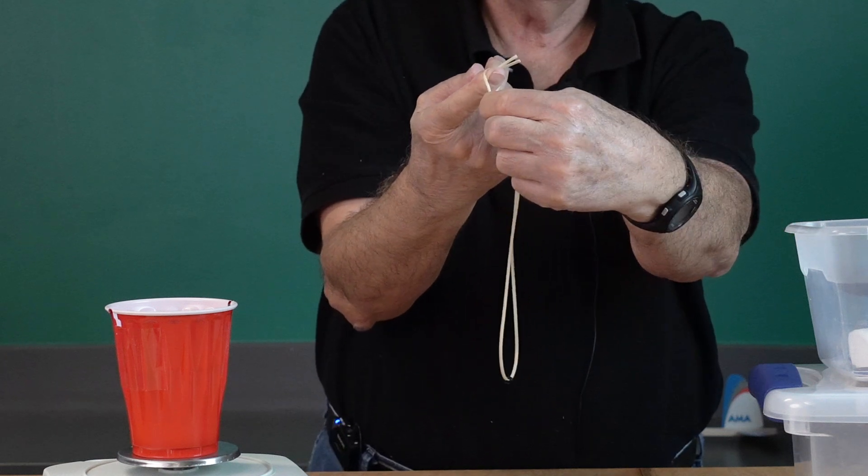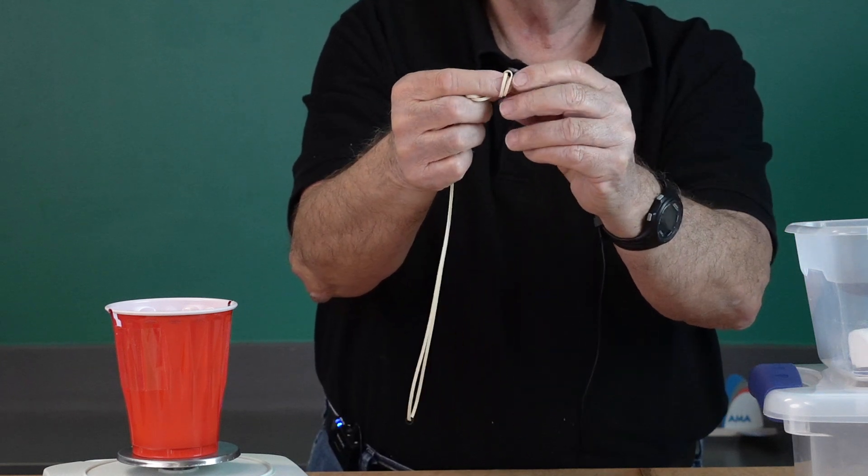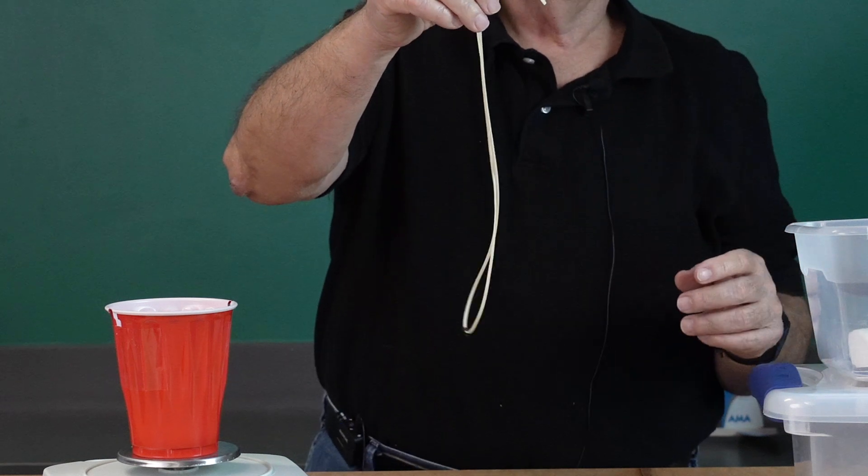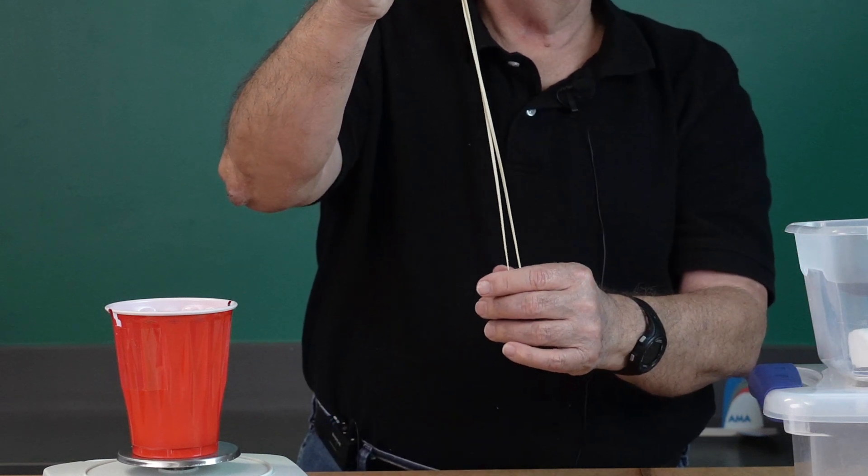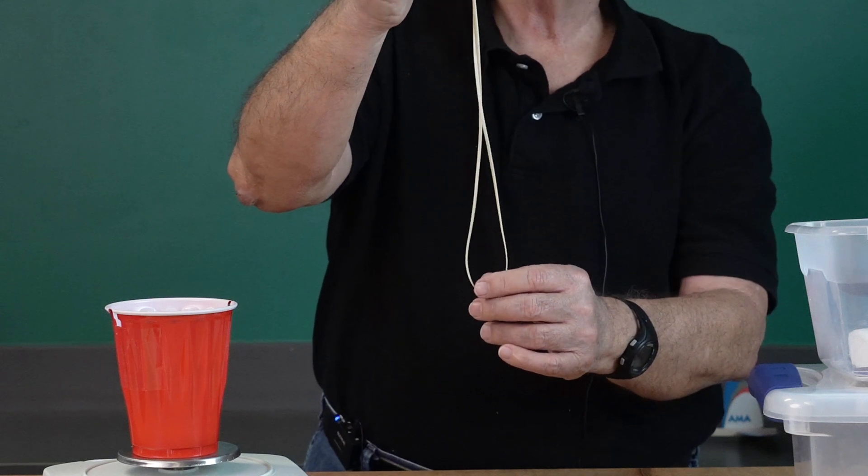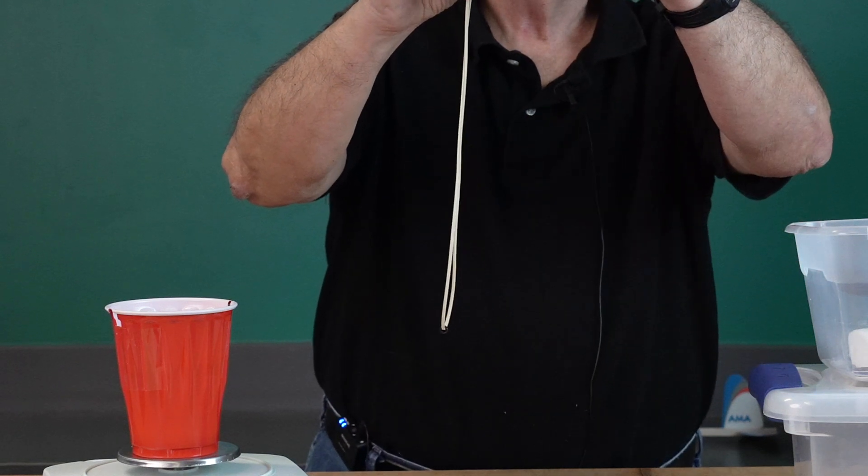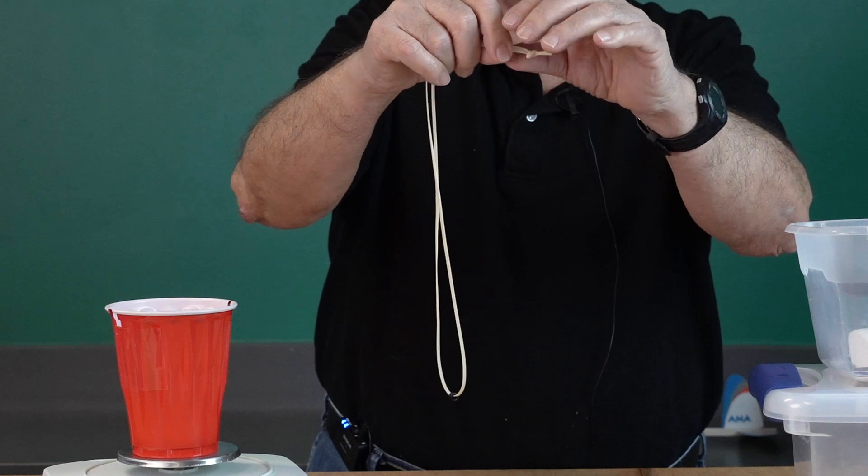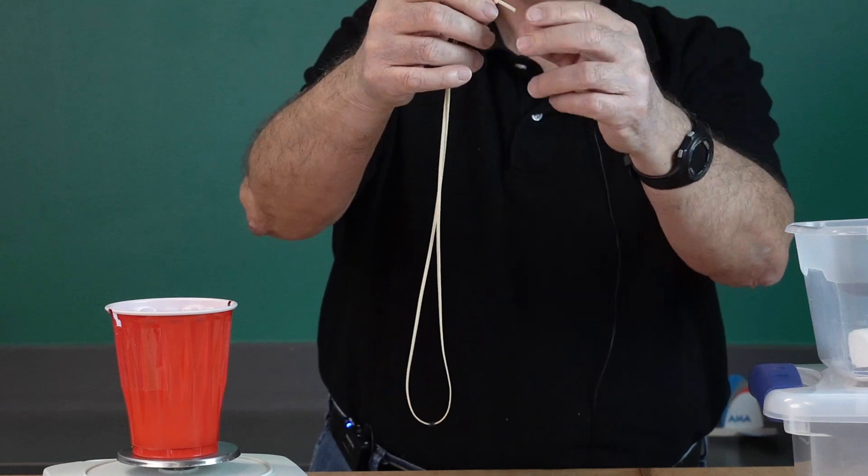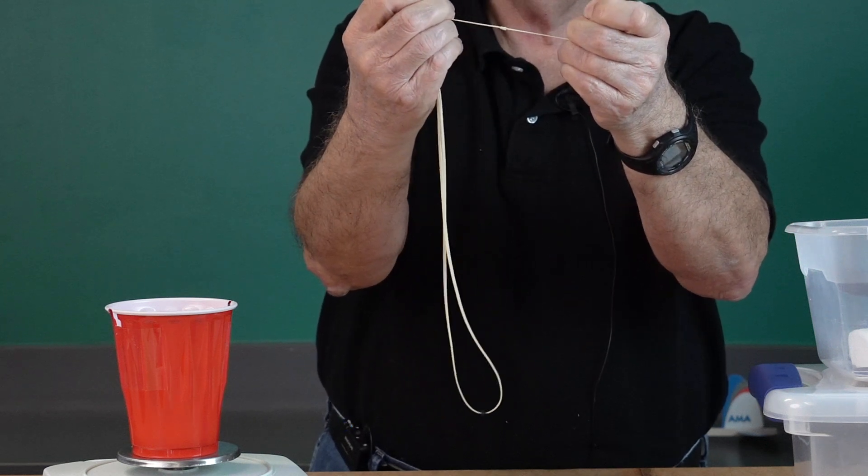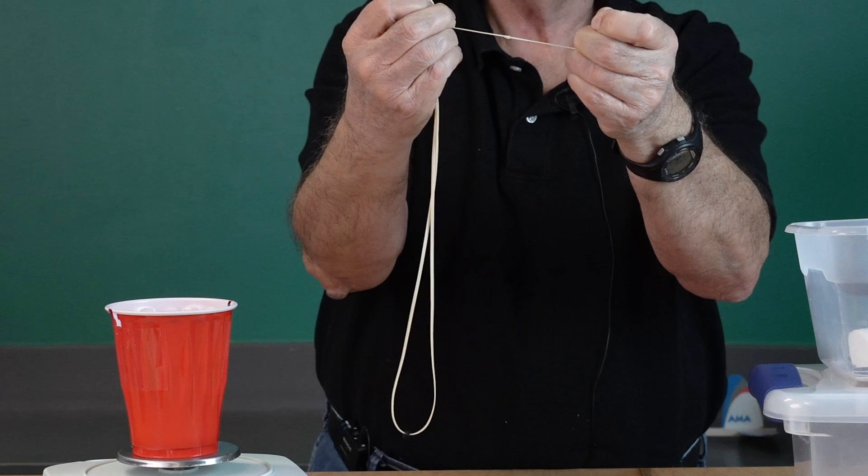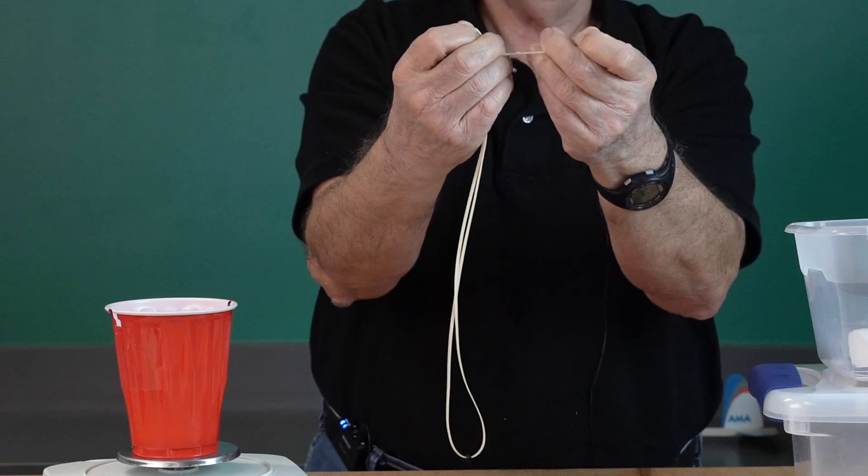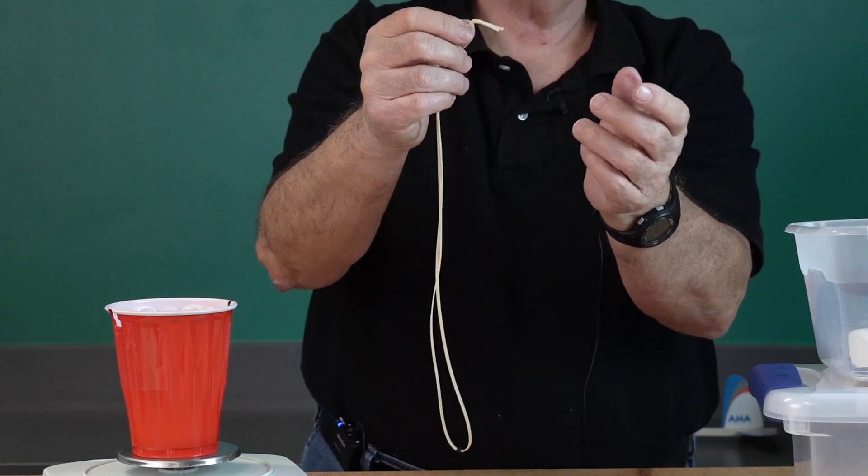Just run the ends through one time like that. It makes a simple overhand knot. Then you want to pull the knot tight. Well, since we want to use as much of the two grams of rubber as we can to power the airplane, while the knot is still a little bit loose, sort of slide the knot down toward the end. Leave enough to hold on to and then just pull it very, very tight. You're not going to break the rubber, believe me. And hold it tight for a few seconds because this is an elastomer. It stretches and the longer you keep tension on it, the tighter the knot gets.